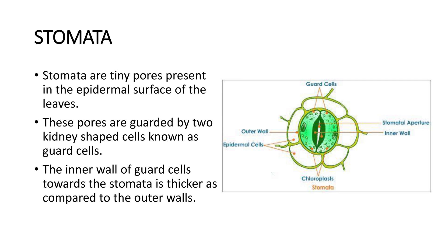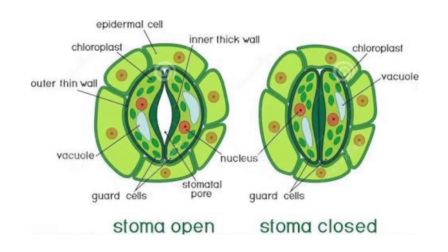Stomata are tiny pores present in the epidermal surface of the leaves. These pores are guarded by two kidney-shaped cells known as guard cells. The inner wall of guard cells towards the stomata is thicker as compared to the outer walls. Stomata are opened in the daytime and are closed at night. Opening and closing of stomata is due to the change in the turgidity of the guard cells.